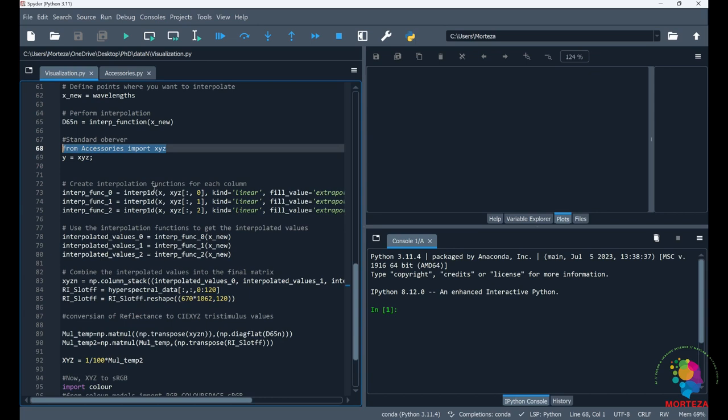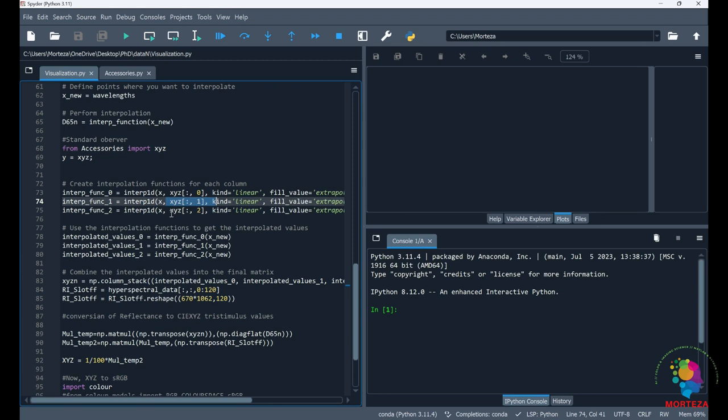And then I have to do the same thing for the color matching functions. The same thing, we just have to do it for three x, y, and z color matching functions, and then combine them to have my final values of color matching functions.